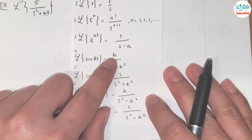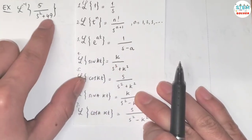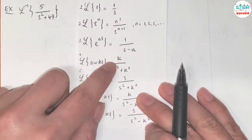And what is K? K in this case is 7, because we have x square plus 49, and 49 can be written as 7 square. So K is 7.